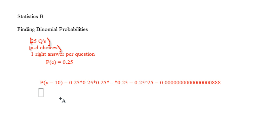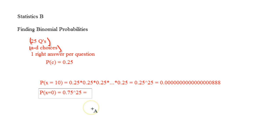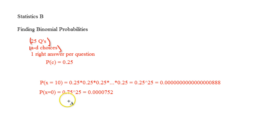Now, if I wanted to find the probability of getting 0 right, I would look at the converse of that, and that would be 0.75 raised to the 25th power. So if I bring up that same problem but change that to 0.75, that actually works out a lot better because the probability is much higher — approximately 0.1235. As you can see, the probability is a lot better for getting 0 right by guessing.